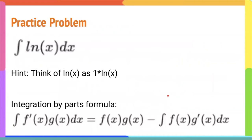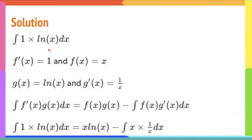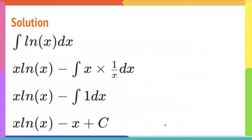Here's a practice problem — try it yourself if you'd like. The solution is to imagine ∫ln(x) dx as ∫1·ln(x) dx. We know the derivative of ln(x), so we set g(x) = ln(x) and f′(x) = 1. Then the integral equals x·ln(x) minus the integral of x times (1/x) dx. Since x·(1/x) = 1, the integral of 1 dx is just x. Our final answer is x·ln(x) − x + C.